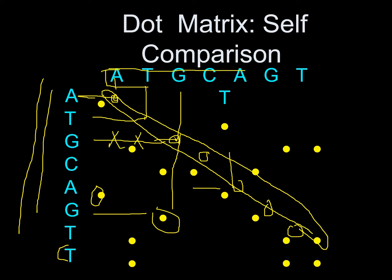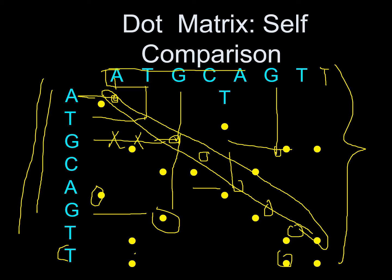If you are asked to show the similarity between two sequences via dot matrix, you place dots at every possible point wherever you see a similarity. For example, GG corresponds here; T and T are similar to each other, and T and T match here as well, so you can place as many dots as you find similar regions.